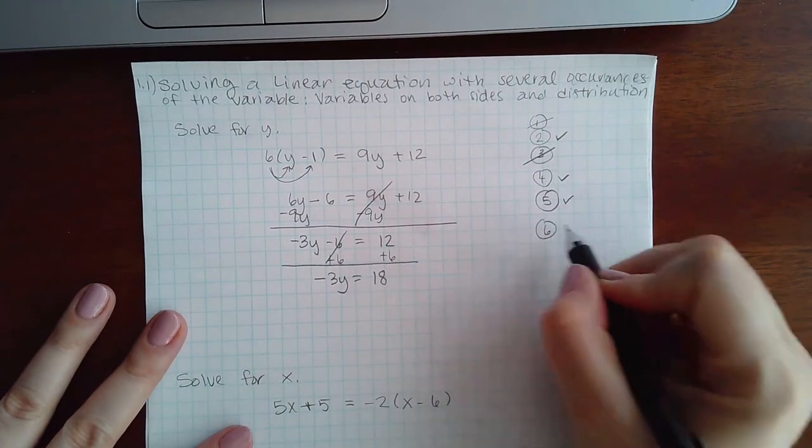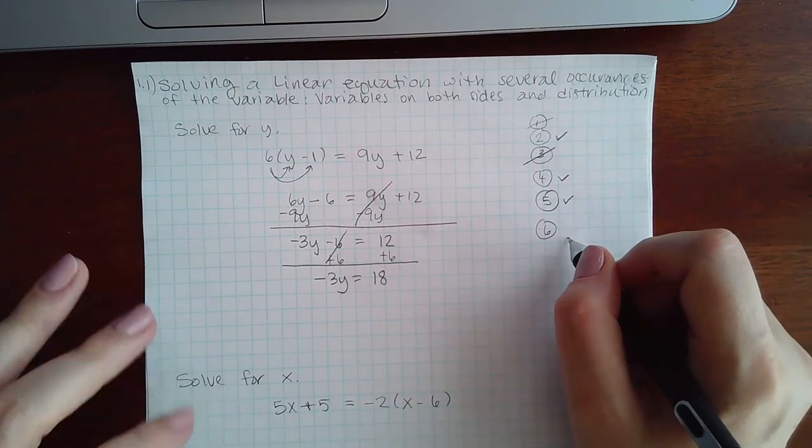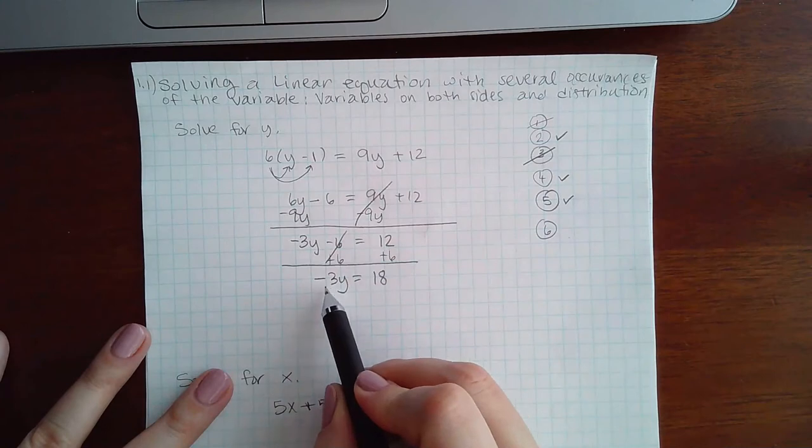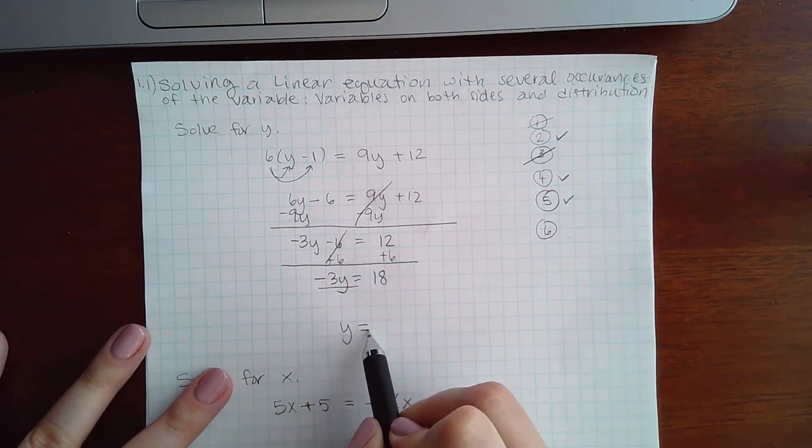Once you get to step 6, which is to divide by the coefficient, that's when you use the same sign. So whatever is in front of that variable, you want to get rid of it so that you're left with y equals all by itself.